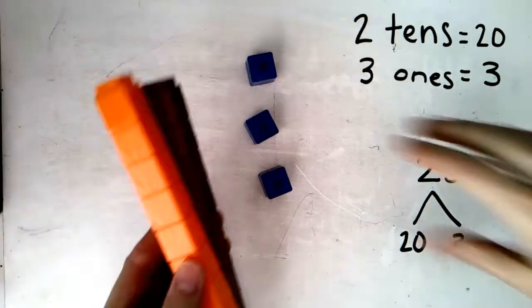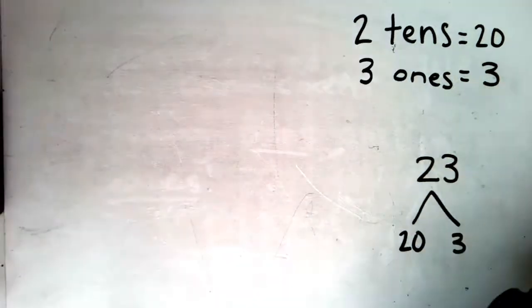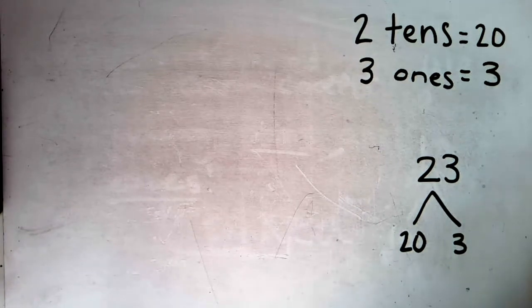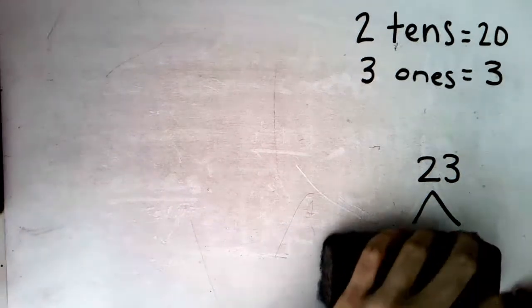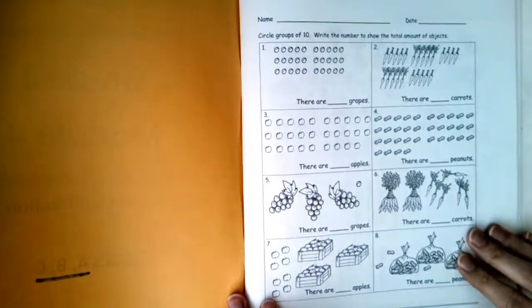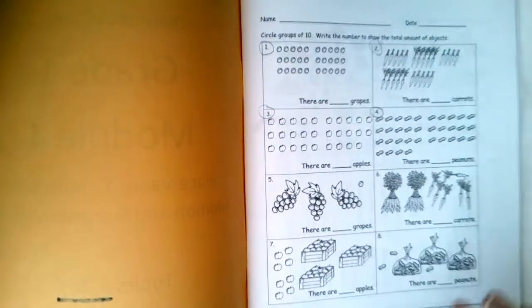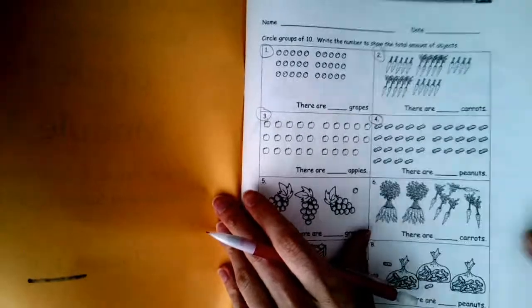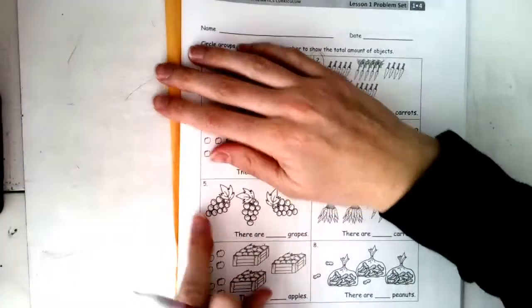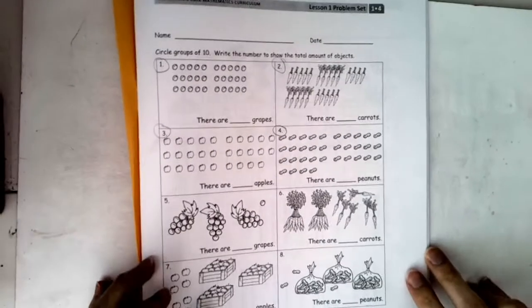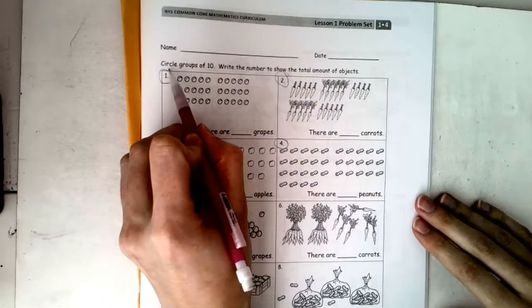Nice job working with those cubes. Remember, these are tools that we are using to learn. Since we are done with them now for today, you can go ahead and put them back off to the side. We're going to continue practicing groups of tens and making number bonds to show how many. Grab your workbook now. We're going to open right here to the first page. On this first page together, we are going to do numbers one, two, three, and four. Let's read our directions.